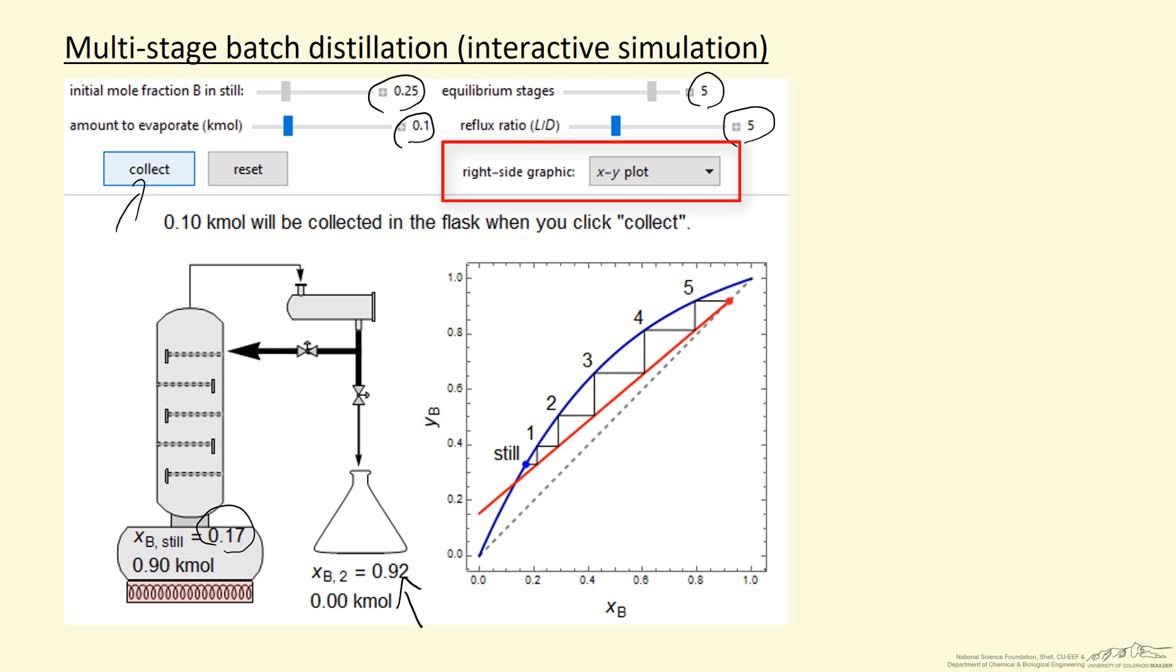Or I could select a view of the flasks that we are collecting. So far, we've collected one, it would show what's the composition in that flask.